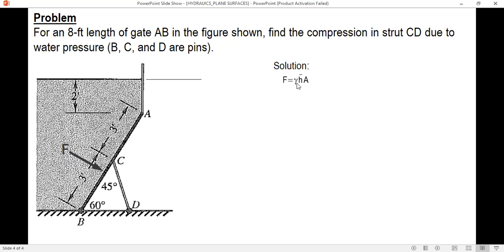So again, the formula is gamma, specific weight of water, and h bar, and then area times area. So this is h bar and the value of this is the angle is 60 degrees, therefore the value of h bar is 2 feet plus this distance. And since this angle is 60 degrees, this distance is hypotenuse 3 feet.